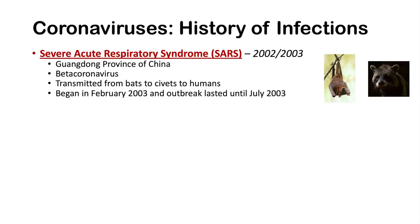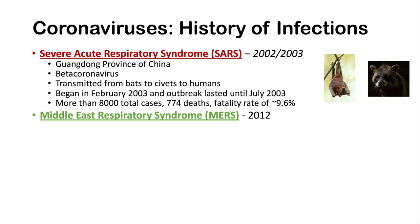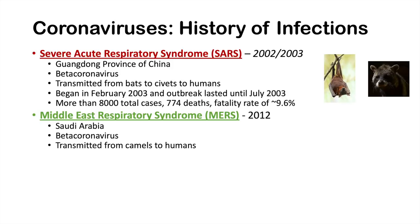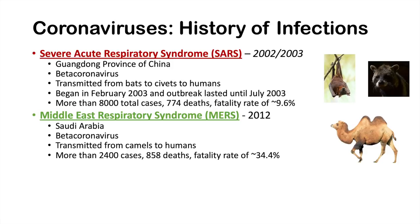Another coronavirus outbreak was Middle East Respiratory Syndrome, or MERS, which occurred in 2012, starting in Saudi Arabia and quickly spreading to several countries. It is also a beta coronavirus. The virus appears to have been transmitted from camels to humans — through eating camels, exposure to camels, or drinking camel milk. As of this video, there are more than 2,400 cases with 858 associated deaths, giving a fatality rate of approximately 34.4%.